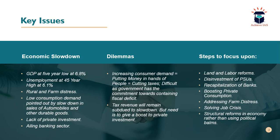Output can only come from a combination of all four factors of production, including entrepreneurship. There is also the issue of labor reforms — currently there are over 200 laws that regulate firms relating to labor, creating an overburden of compliance. Another step the government can focus on is disinvestment of public sector undertakings. For example, Air India is not performing, its revenues are negative, and it is a liability on the government. The government should focus on disinvestment and infuse private competition into such PSUs.